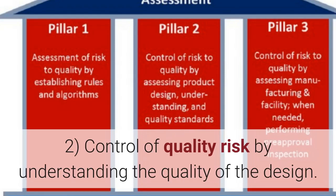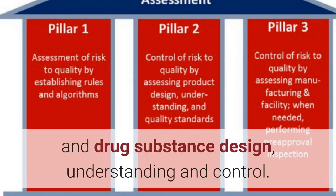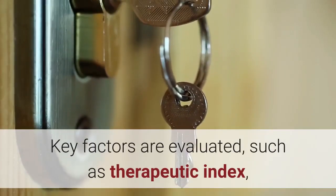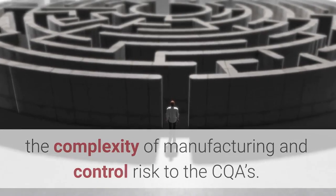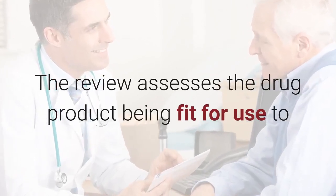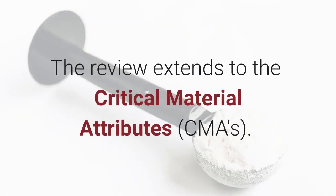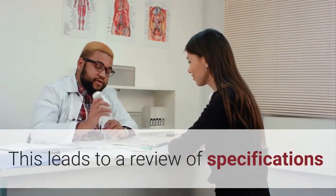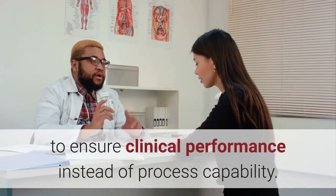The second pillar is control of quality risk by understanding the quality of the design. It seeks to understand drug product and drug substance design, understanding, and control. Key factors evaluated include therapeutic index, the complexity of manufacturing, and control risk to the CQAs. The review assesses whether the drug product is fit for use to meet patient needs throughout the intended shelf life, extending to critical material attributes (CMAs), and leading to a review of specifications to ensure clinical performance instead of process capability.